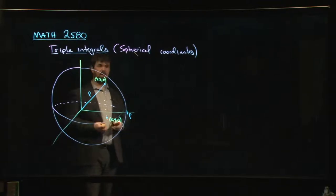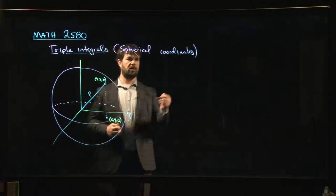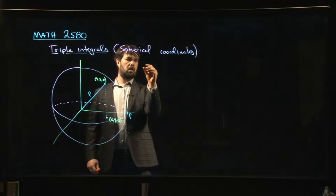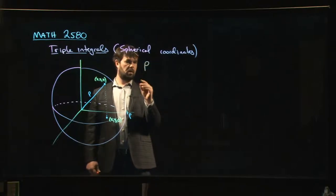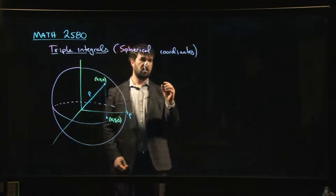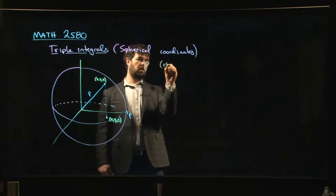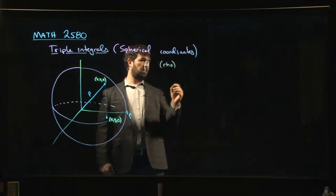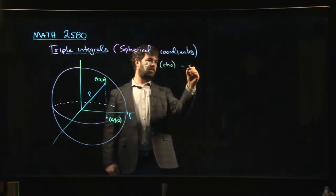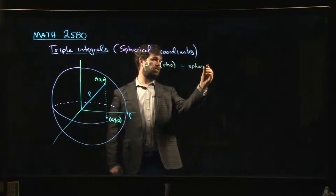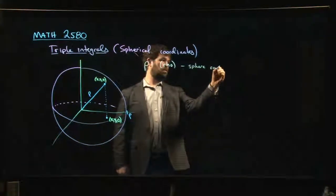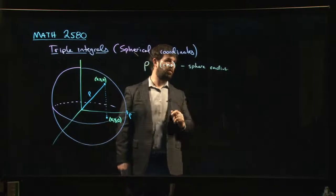So sphere of radius rho. So the spherical coordinates are rho. So this is a Greek rho, R-H-O. And this is the sort of sphere radius.